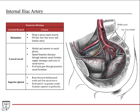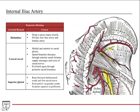The superior gluteal artery is this large branch coming off the posterior division. It goes between two nervous structures: the S1 spinal nerve and the lumbosacral trunk, traveling just between those two. It exits the pelvis via the greater sciatic foramen, superior to the piriformis muscle. Here's your piriformis muscle — it's a major landmark in the hip region, which we'll cover more in the lower limb lecture series. The superior gluteal artery exits through the greater sciatic foramen to provide blood supply to the gluteal muscles.